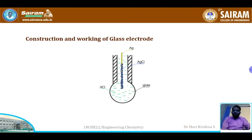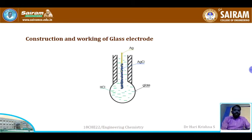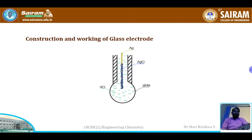The entire setup is dipped in a solution containing H+ ions of unknown concentration. When dipped, at the boundary of the glass membrane, an H+ ion exchange reaction takes place. Because of this, a potential is developed at the boundary, called the boundary potential, due to the difference in H+ ion concentration inside and outside the bulb.